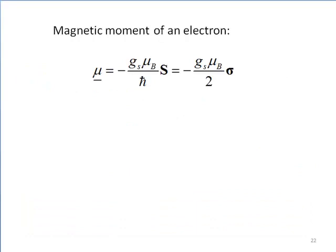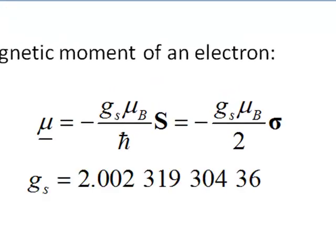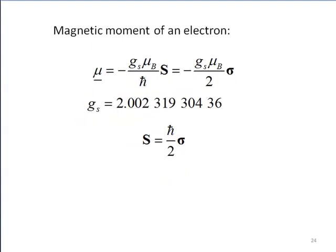Let's look at the magnetic moment of an electron. It is given in terms of the electron G-factor, which is accurately known to 11 significant figures, and the Bohr magneton. It is also given in terms of the spin 1/2 operator S, which is also given in terms of the Pauli spin vector sigma.